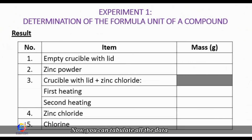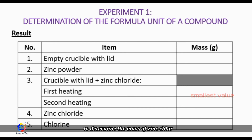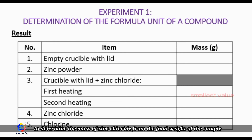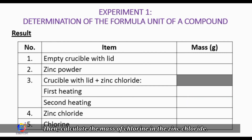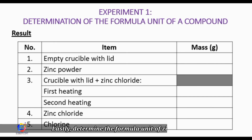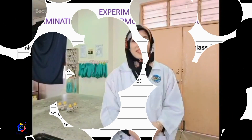Now you can tabulate all the data. Then you can calculate the mass of chlorine and the zinc chloride and determine the formula unit.